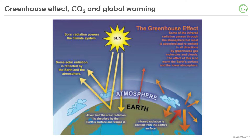Not all of the thermal radiation emitted by the Earth reaches outer space. Part of it is absorbed and reflected back to the Earth's surface by water, meaning clouds, and other greenhouse gas molecules. This leads to a global average temperature of around 14 degrees Celsius, which is well above the minus 19 degrees Celsius we would be experiencing without the natural greenhouse effect. The concentration of the main greenhouse gas, which is water vapor, is not influenced by humans.